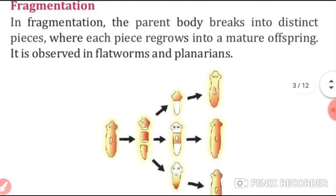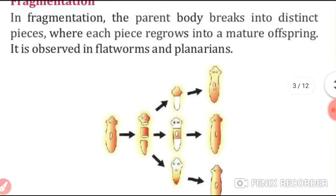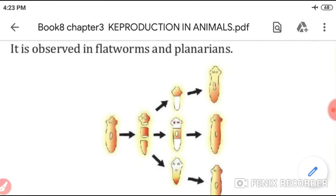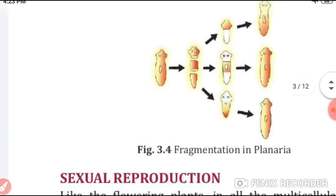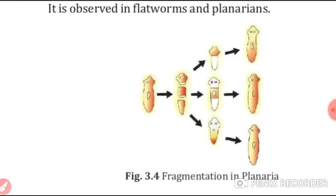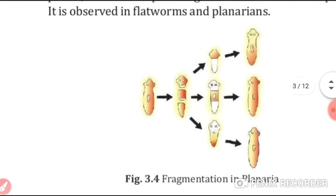Now, fragmentation. In fragmentation, the parent body breaks into distinct pieces where each piece regrows and develops into a mature organism. This happens in flatworms. As you can see in the diagram, one parent divides into three parts, and each of those three parts develops into a new organism.